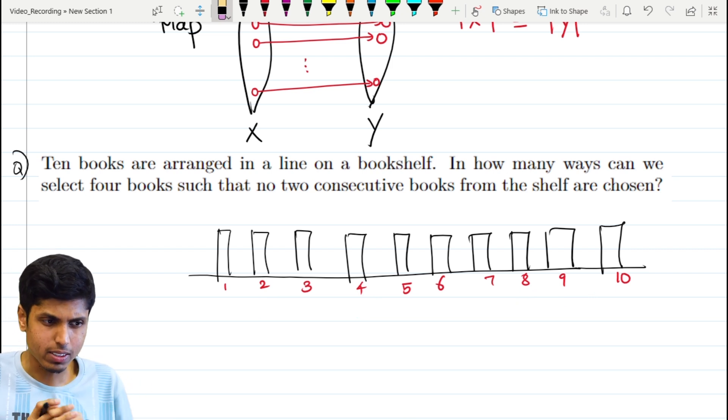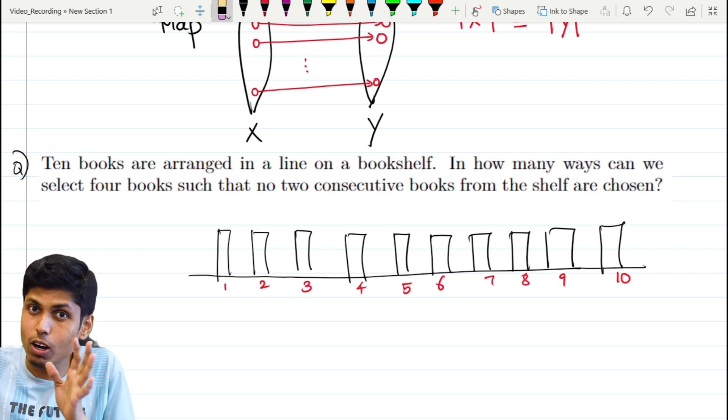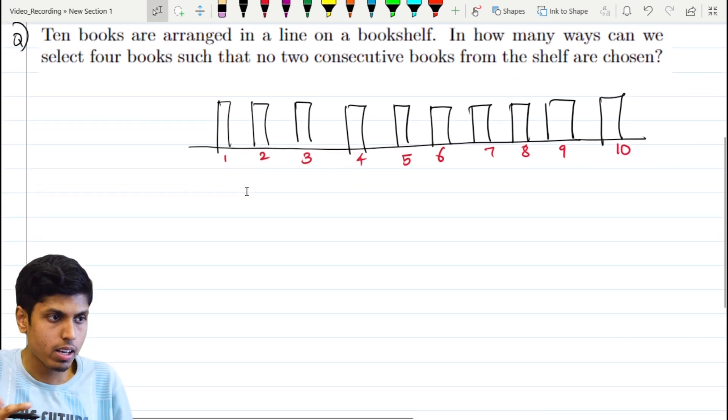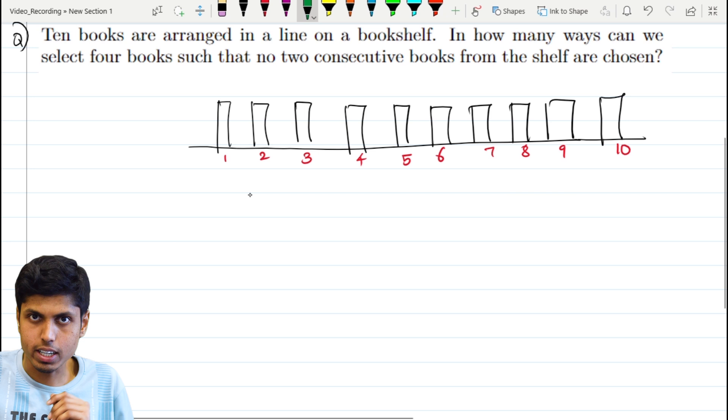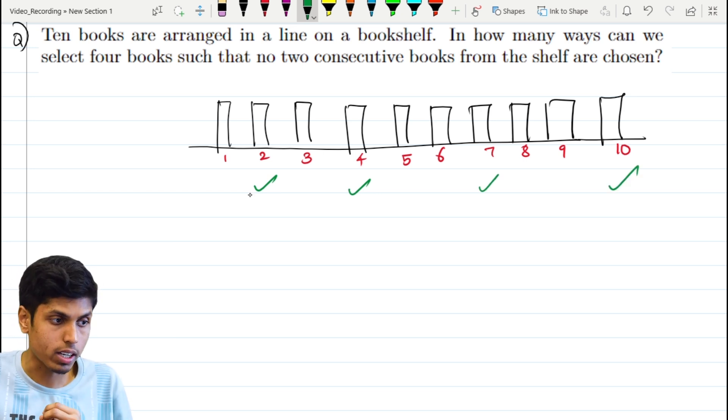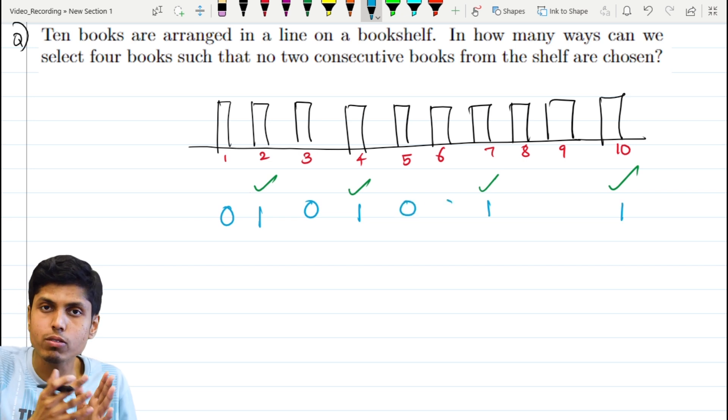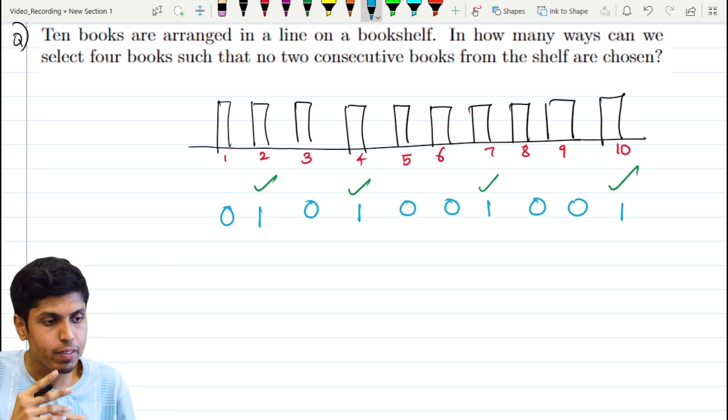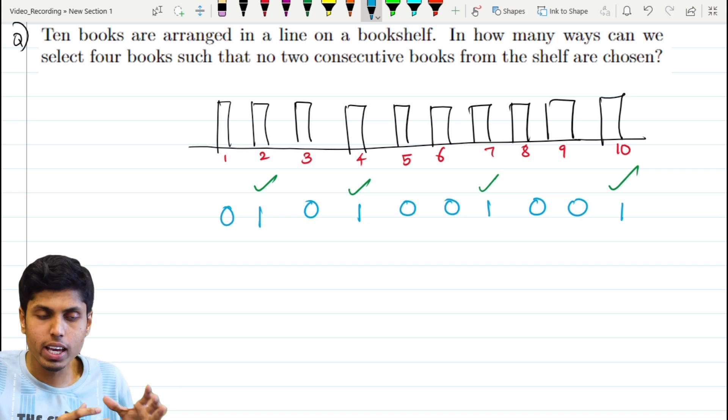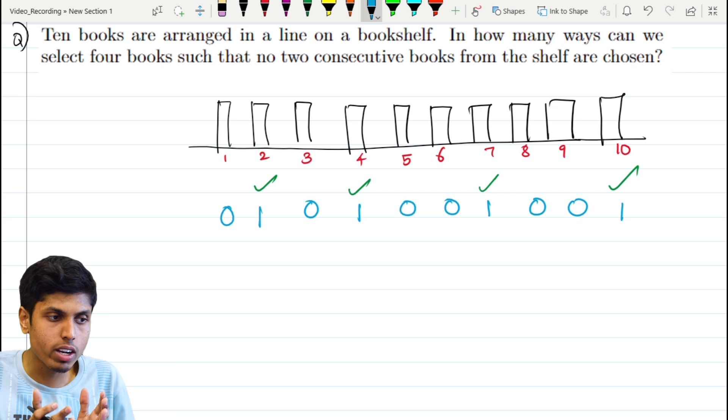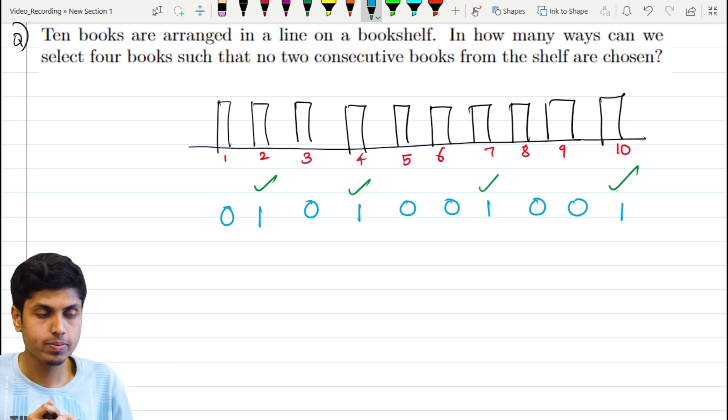So clearly set-wise this is not very easy, but let's map it to some other set and count that way. How am I going to construct this map? Put a tick mark for the books that you are selecting. For example, if you select 2, 4, 7, and 10, put a tick mark and assign them the digit 1, and if you are not selecting a particular book, assign a digit 0. So what you will essentially have is a sequence of 0s and 1s, thus forming a binary sequence.